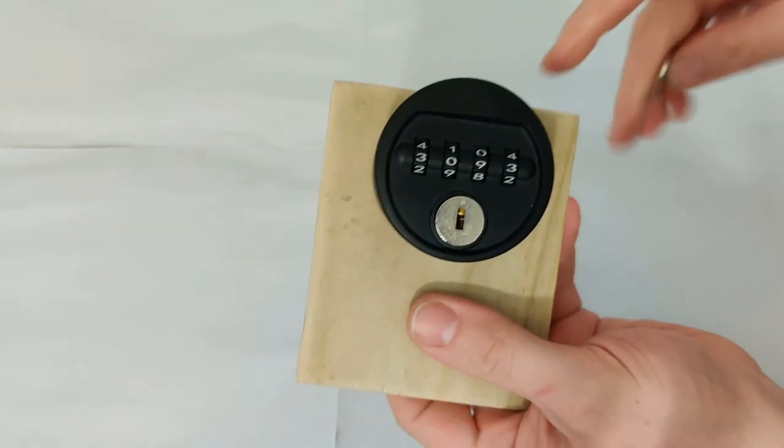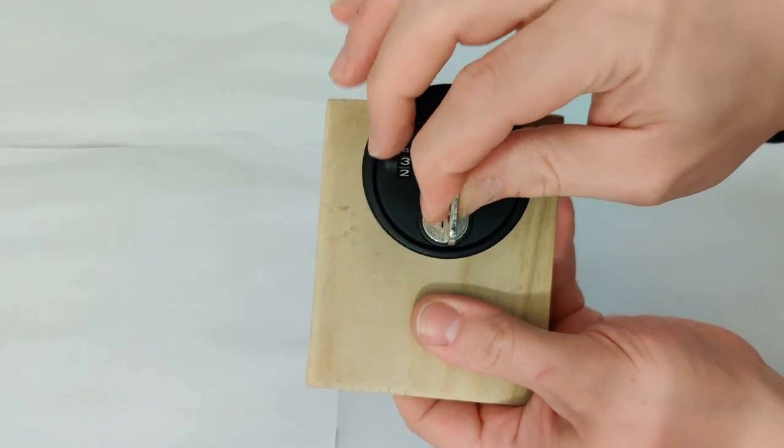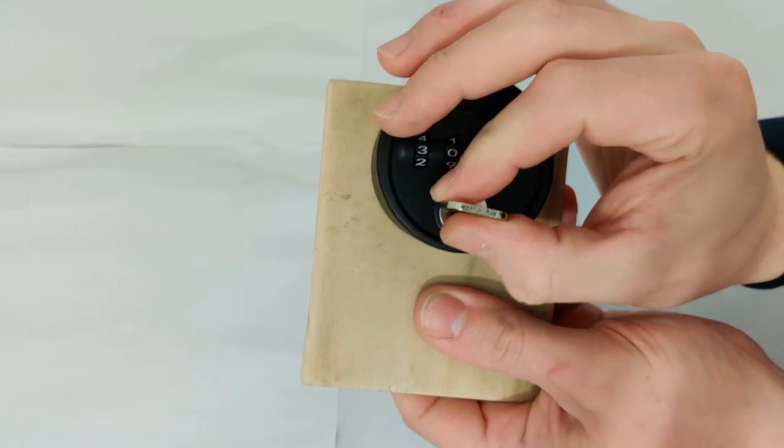So what we do is we take our key, put it into the lock, and rotate it 90 degrees that way.